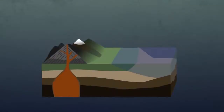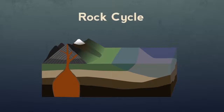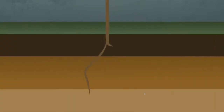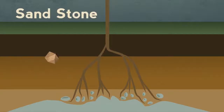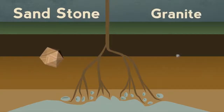In this video, you'll learn about the different types of rocks and the dynamic rock cycle. Plant roots help to create new soil from solid rock, and they get nutrients and support from the soil. This solid rock is often sandstone or granite.